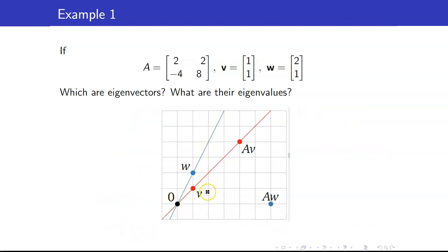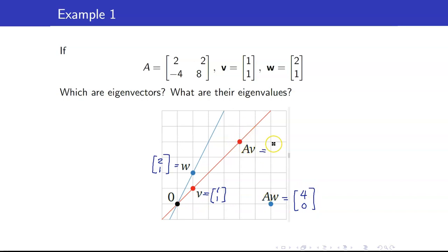If we graph this, V is the vector [1, 1] and W is the vector [2, 1]. When we multiplied A with W, we obtained [4, 0], so that vector changed direction. Whereas AV is equal to [4, 4]. So eigenvectors are vectors such that when we multiply that vector with A, we get a scalar multiple of the vector. That's why they lie on the same line.